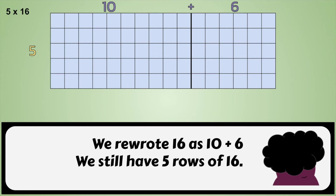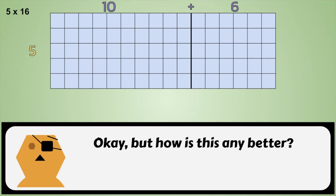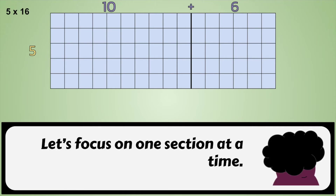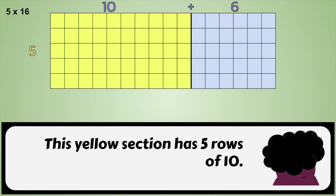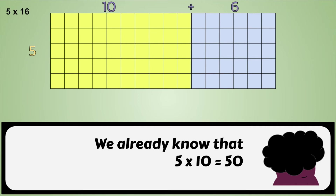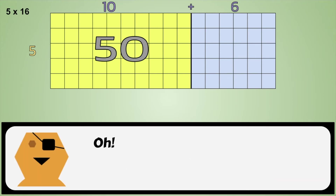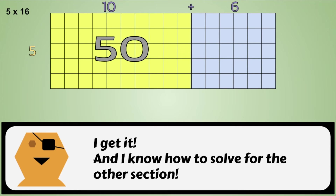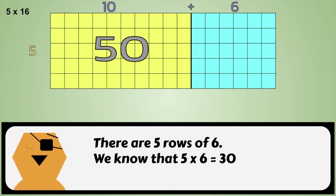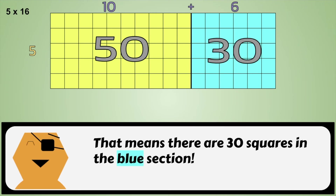We still have five rows of sixteen. But how is this any better? Let's focus on one section at a time. This yellow section has five rows of ten. We already know that five times ten equals fifty, which means there are fifty squares in the yellow section. I get it, and I know how to solve for the other section. There are five rows of six. We know that five times six equals thirty. That means there are thirty squares in the blue section.